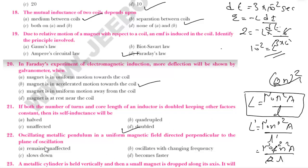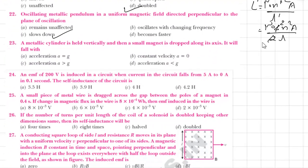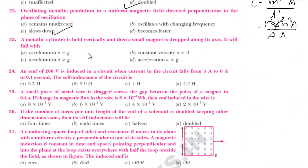An oscillating metallic pendulum in a uniform magnetic field directed perpendicular to the plane of oscillation will slow down. This is due to eddy currents. Because of eddy currents, the oscillation will slow down.